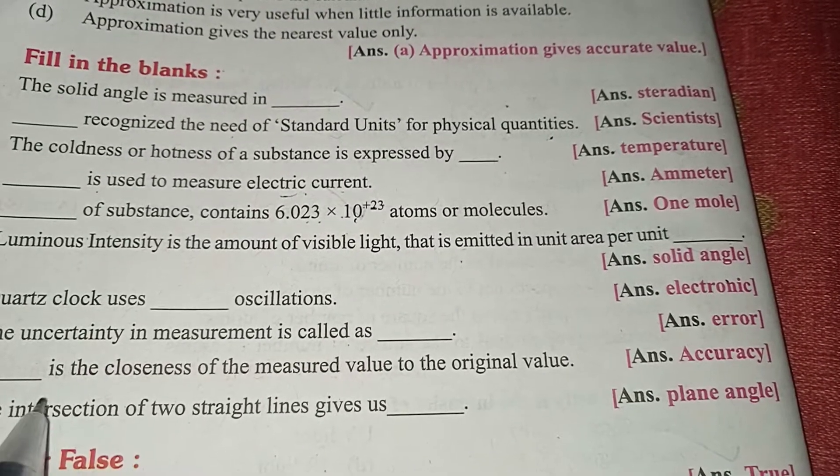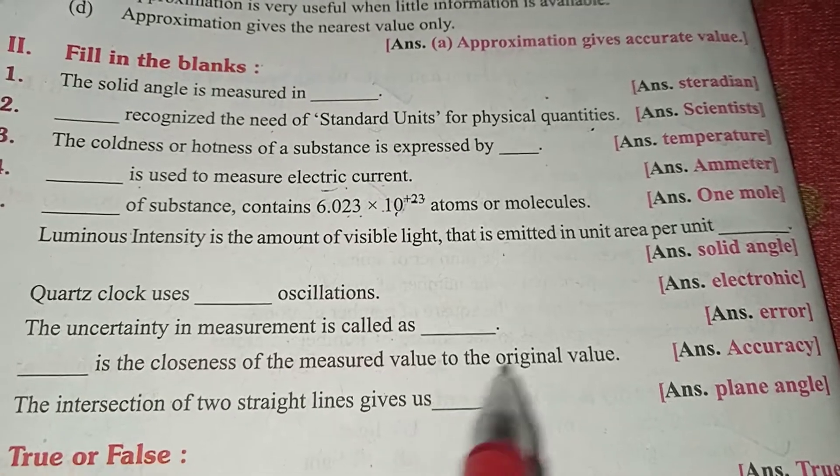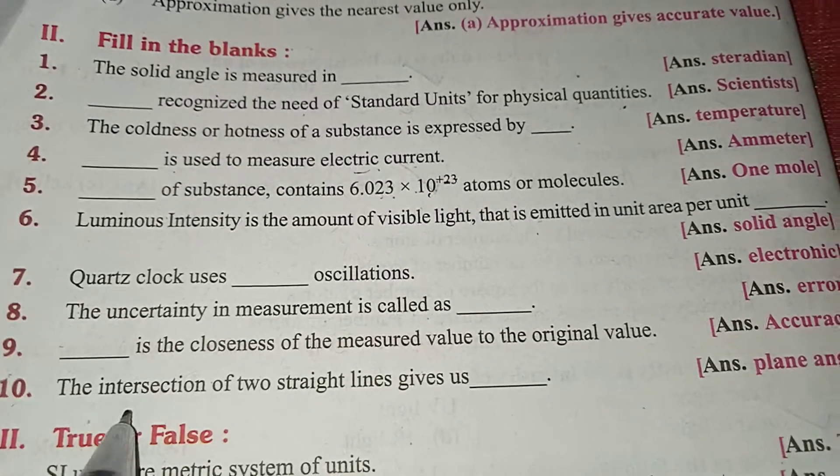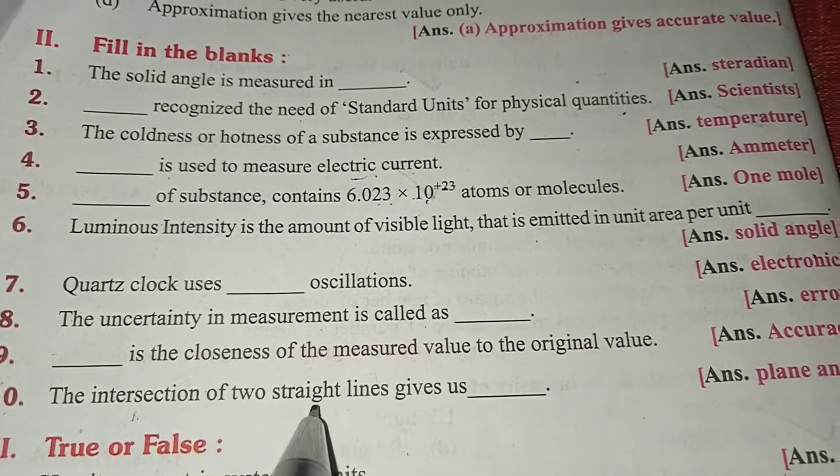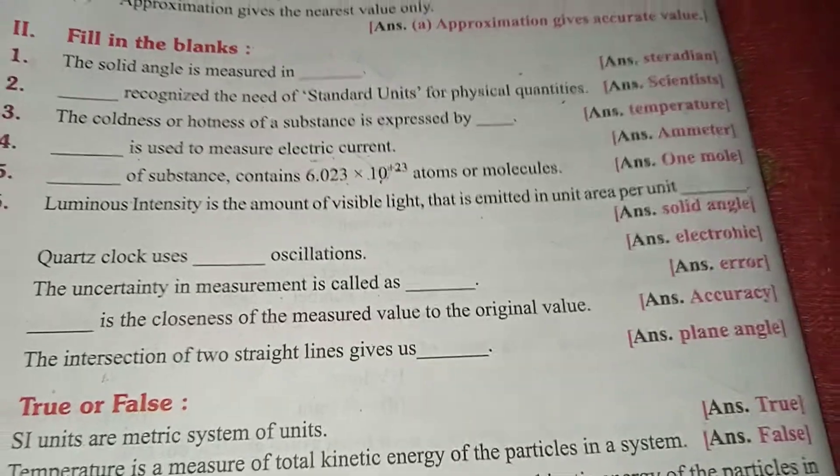Accuracy is the closeness of the measured value to the original value. The intersection of two straight lines gives us plane angles.